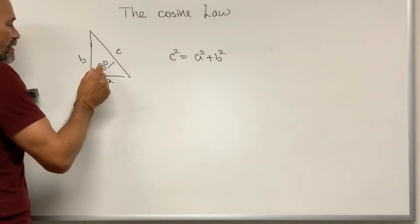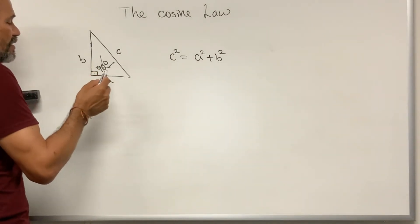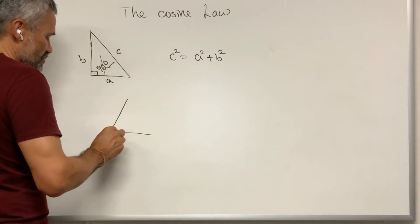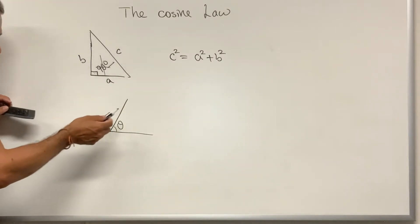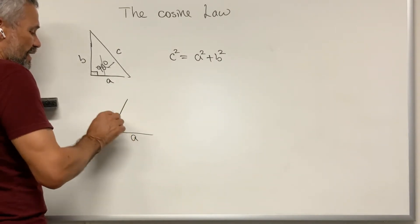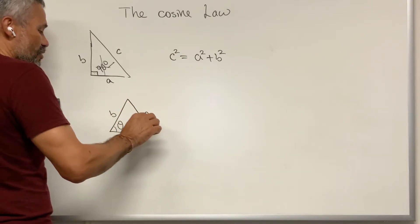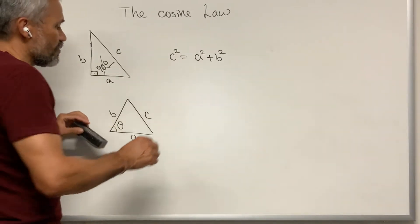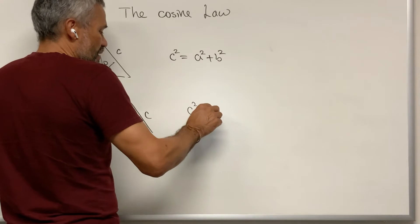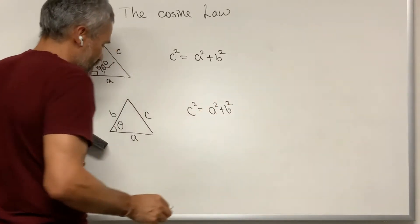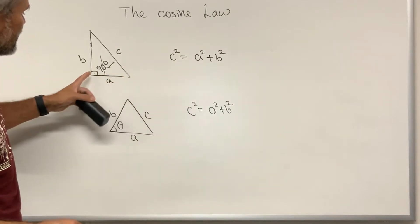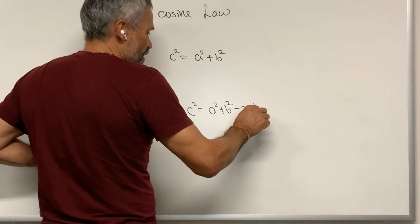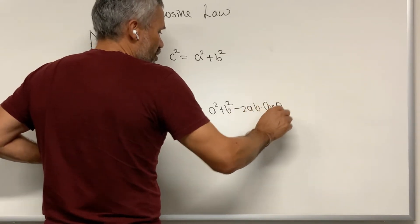The cosine law says the following. Suppose this angle is any angle — it could be 90, but it doesn't have to be. If this is A and this is B, and C is the side opposite to that angle, then we have C squared equals A squared plus B squared, minus 2 times AB times cosine of the angle.